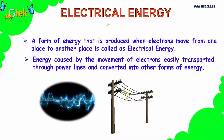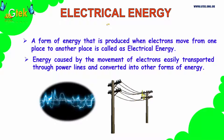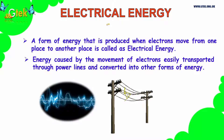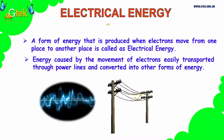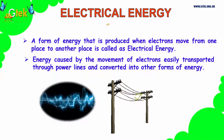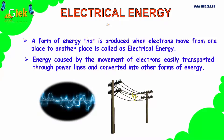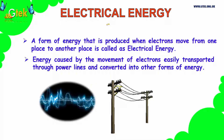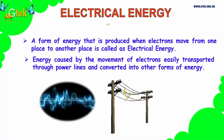Now let's see about energy. The first is electrical energy. A form of energy that is produced when electrons move from one place to another is called electrical energy. Energy caused by the movement of electrons is easily transported through power lines, and it can be converted into other forms of energy.